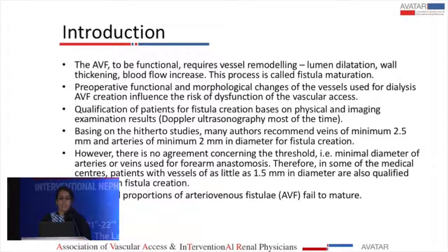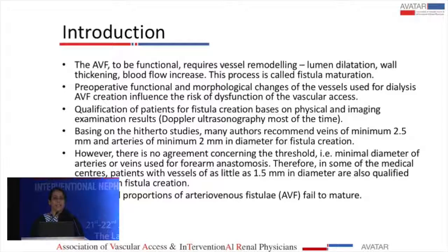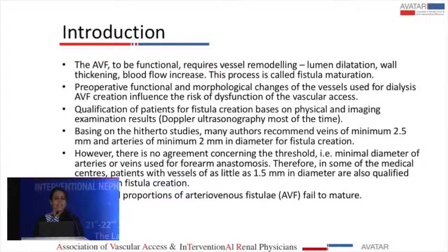As all of us know, an AV fistula to be functional requires a process called maturation. This maturation process includes vessel remodeling — that is lumen dilatation, wall thickening and increase in blood flow. Qualification of patients for fistulas requires physical assessment as well as imaging examination. Many authors have recommended a minimum venous diameter of 2.5 mm and an arterial diameter of 2 mm for fistula creation. However, there has not been any established cut-off or threshold, and therefore many institutes go ahead with fistula creation even with 1.5 mm vessel diameter.